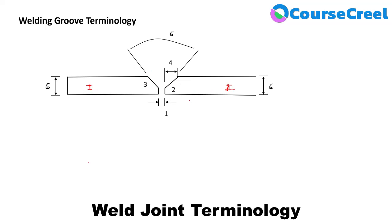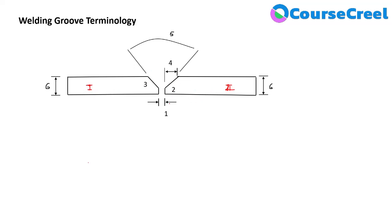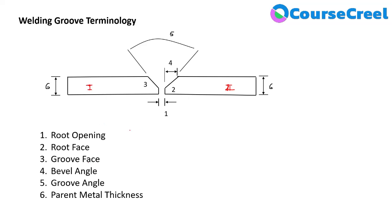With the help of these two components we can define the different terms of the weld joint. There are six terms or parts involved in the weld groove. Component one and component two are the parts, and at this particular area we need to form the weld pool — the welding material will fill here and form the weld joint. Term number one, this particular opening, represents the root opening. Term number two, this particular face, represents the root face.